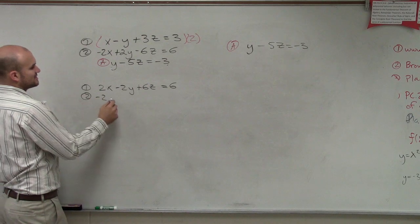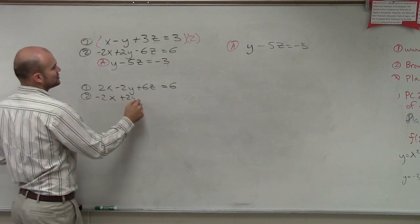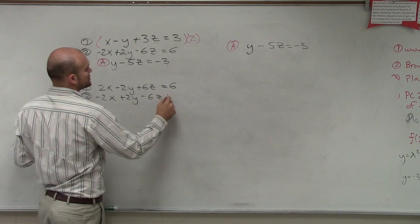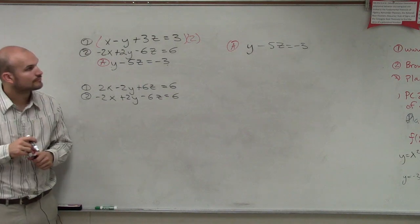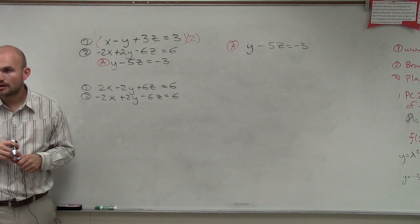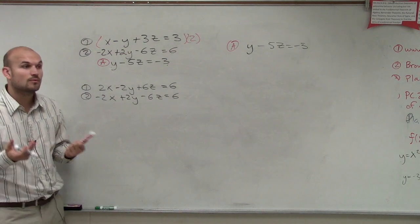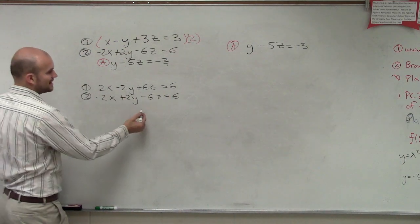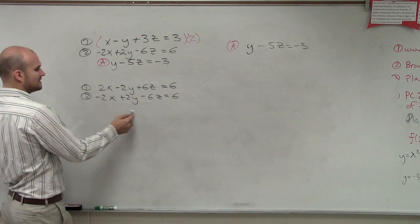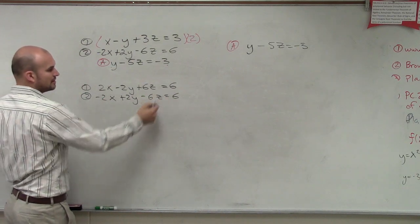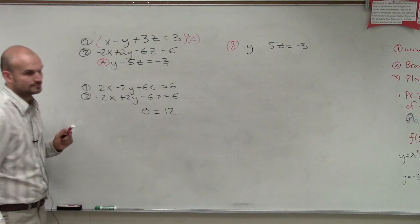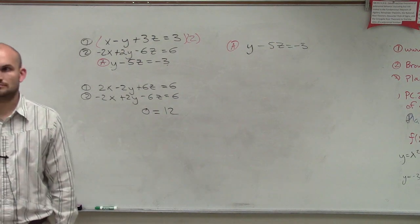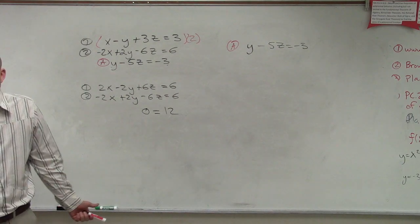And then equation 2 is going to remain the same where I did not change anything. When I do that, what happens is I add these up and I end up getting this becomes 0, 0 equals 12. So I get 0 equals 12.